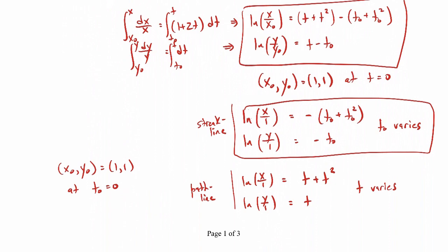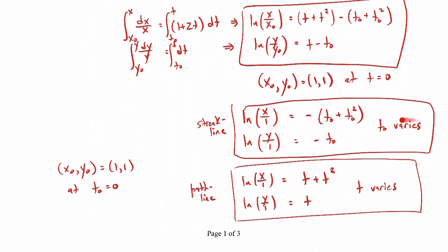So those are our path line equations. For the streak line, t0 varies because we're dealing with many fluid particles all passing through point x0, y0 at different initial times. For the path line, we have one fluid particle passing through x0, y0 when t0 equals zero, and t varies as we trace out its path.